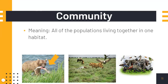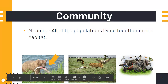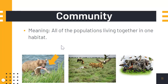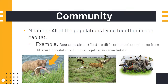Community: all of the populations living together in one habitat. In this example, you see the fish and the bear living next to the river. They're all living together in the same habitat.